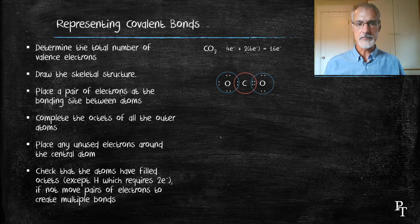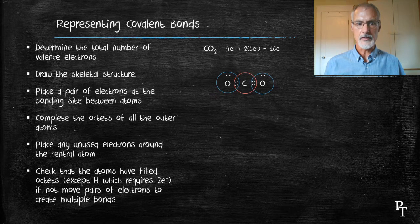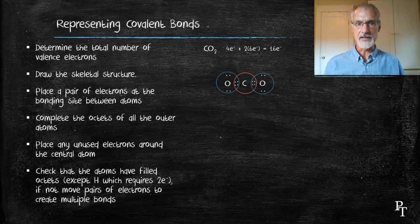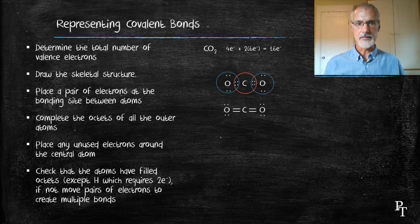In the first case, I'll grab two from this oxygen and move them in. It improves the situation, giving carbon now six, and I'll do the same with the other oxygen. Now it has eight. So all of the atoms have a complete complement of eight electrons. This is sometimes drawn this way.